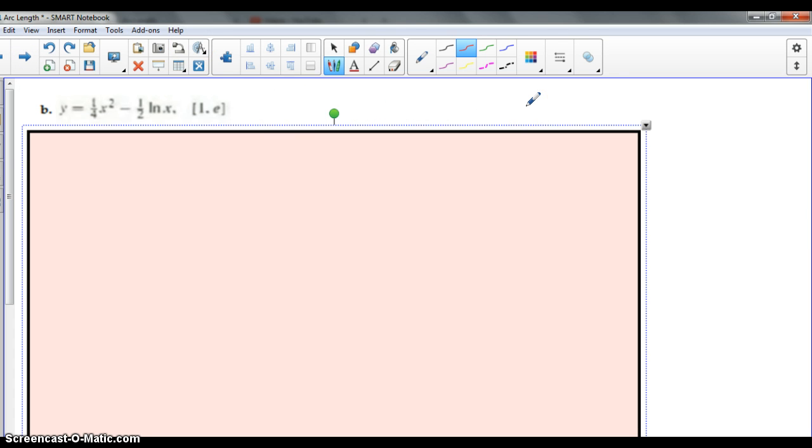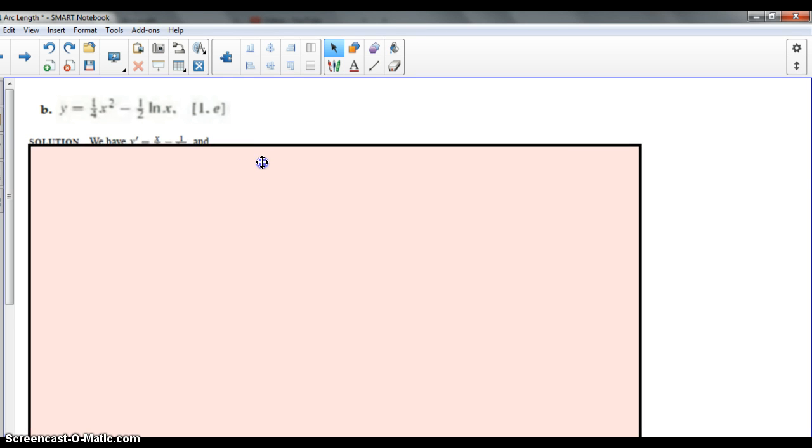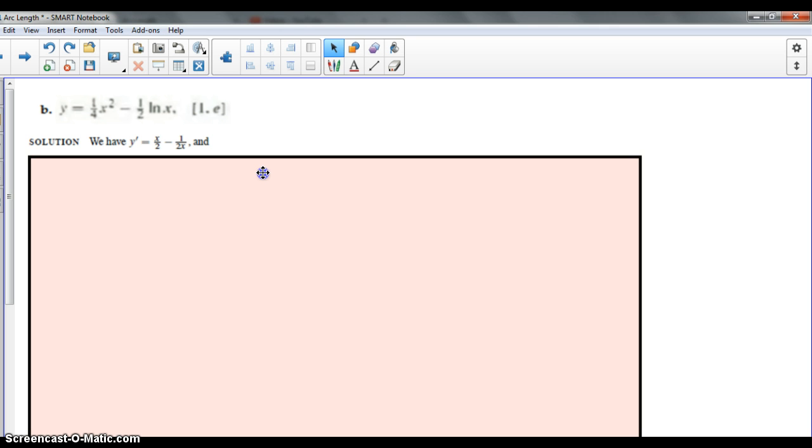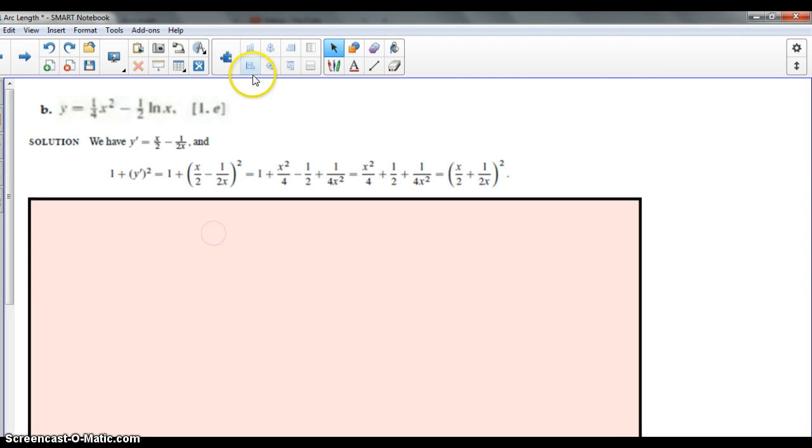Our next example, one fourth x squared minus one half natural log x from 1 to e. This one is not as terrible. We are not going to have a crazy substitution like in the last example, just a bunch of painful terms. So as we have been doing, we are going to take the derivative of the function first using the power rule. It looks similar to what we did before for arc length. The derivative is one half x or x over 2 minus 1 over 2x. We will take it and square it and add 1.